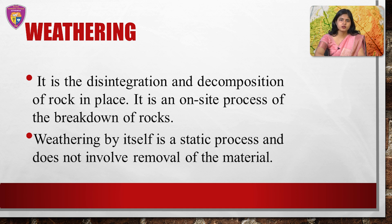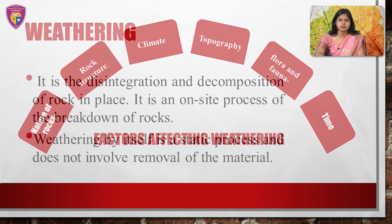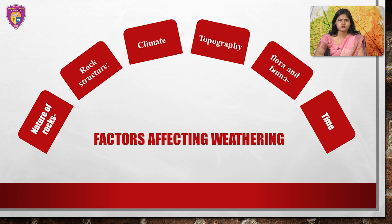However, there are several factors that affect weathering, such as nature of rock, structure of rock, flora and fauna, topography, duration and climate. As each rock type is composed of a particular set of minerals which are joined together by crystallization, chemical bonding or cementing, rock type determines the resistance of the rock to the weathering process that operates in that particular environment.